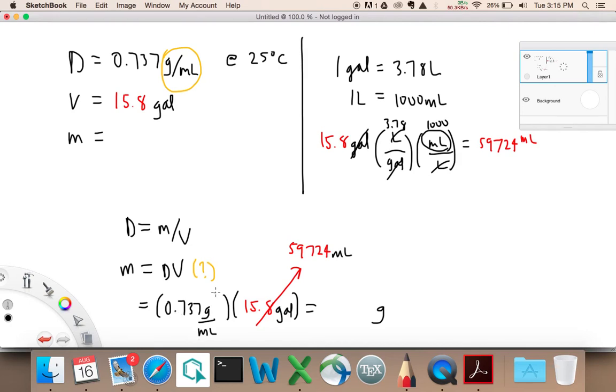So this number then is going to be 59,724 mils. Well, this is perfect because when I multiply these two numbers now, the mils are going to cross off and I'm going to be left with grams. We already got rid of the gallons, right? I'm going to be left with grams, which is exactly what I wanted. So the answer here is going to be 0.737 times 59,724, and it's going to be grams because I crossed off my mils. Which is equal to 0.737 times 59,724 equals 44,016.588.